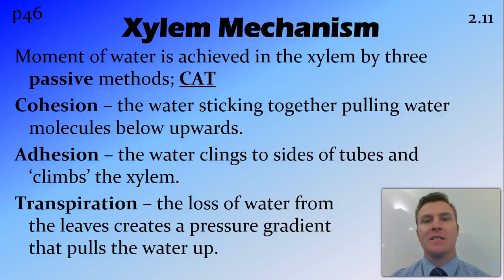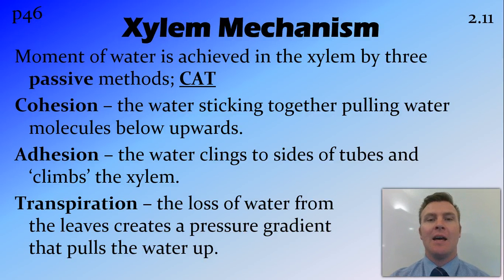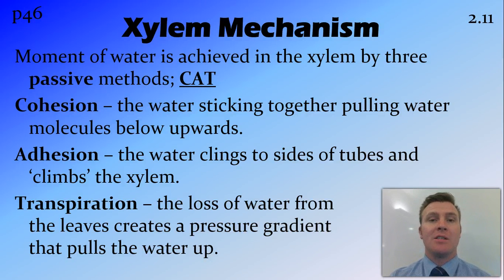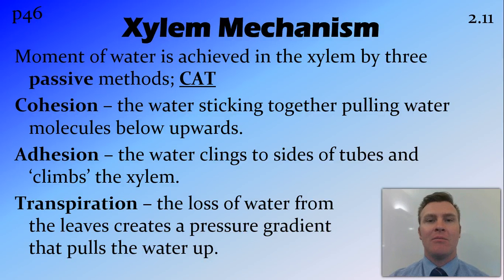Lastly, the T stands for transpiration — the loss of water from the leaves to the atmosphere. This loss of water at the top of the xylem creates a negative pressure which pulls the rest of the water up the xylem. It's quite amazing to think that in really tall trees like the giant redwoods, these xylem vessels run from the roots all the way to the leaves, with no energy being expended to move all that water up.